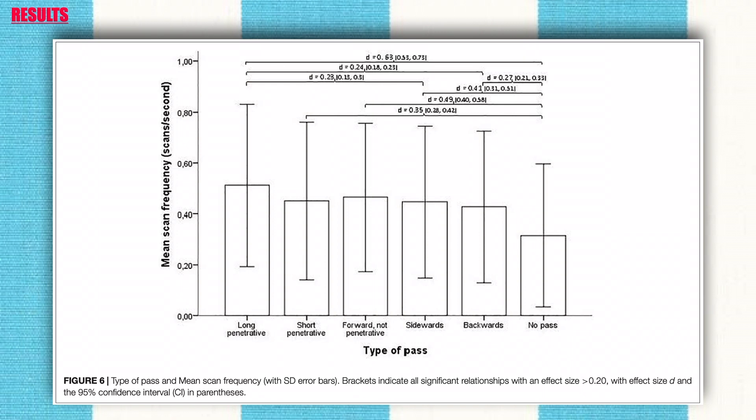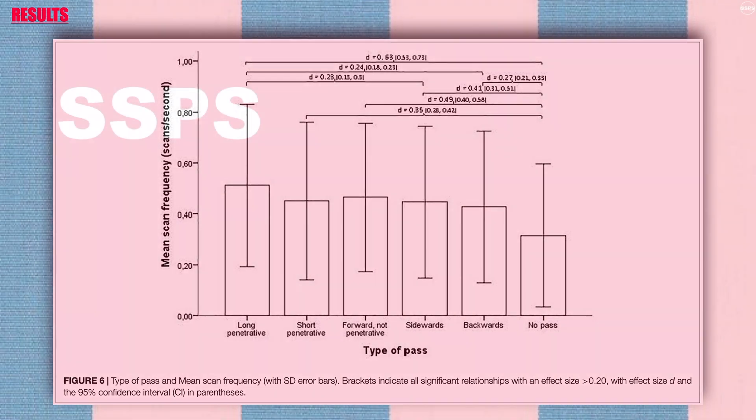Players scanned significantly more frequently when possession was maintained after their actions than when possession was lost. For possessions ending in a pass, players also scanned more when their passes reached a teammate than when their passes did not reach a teammate.